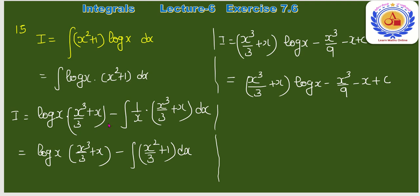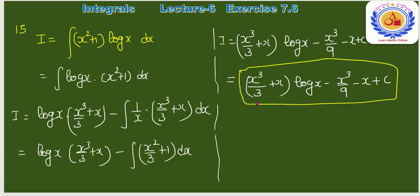∫(x² + 1)dx = x³/3 + x। So: log(x)·(x³/3 + x) − ∫(1/x)·(x³/3 + x)dx। = log(x)·(x³/3 + x) − ∫(x²/3 + 1)dx। Final answer: (x³/3 + x)·log(x) − x³/9 − x + C।